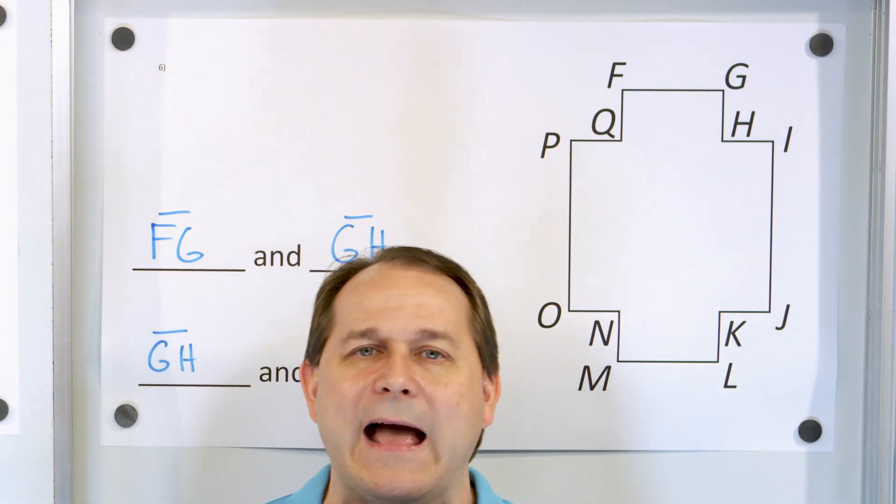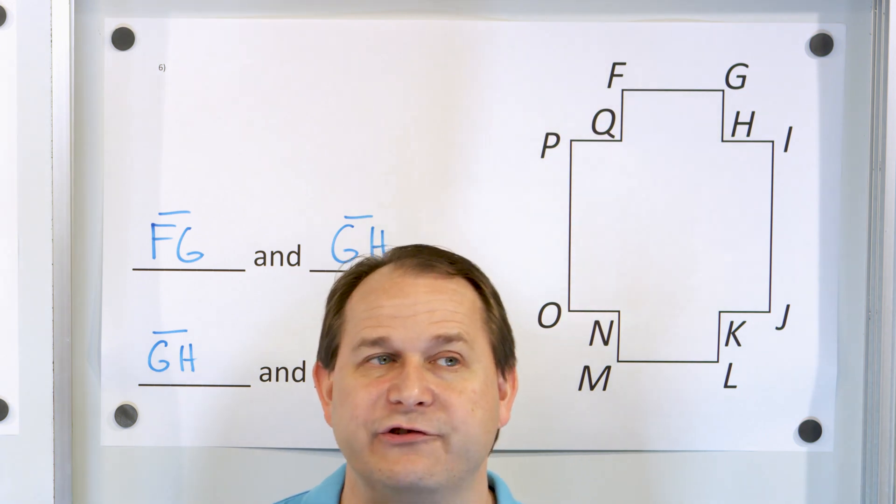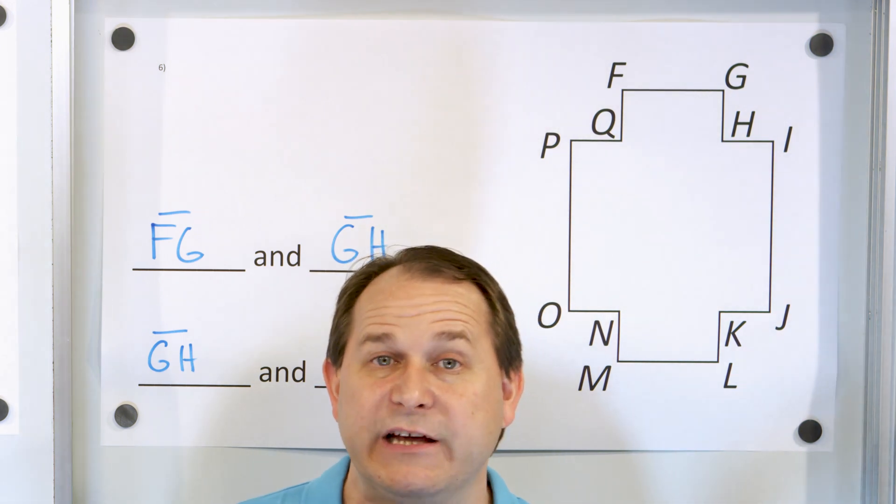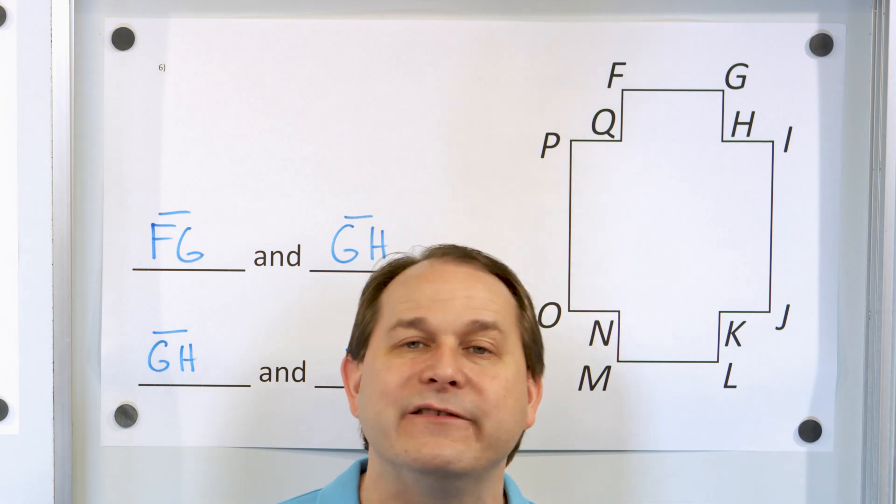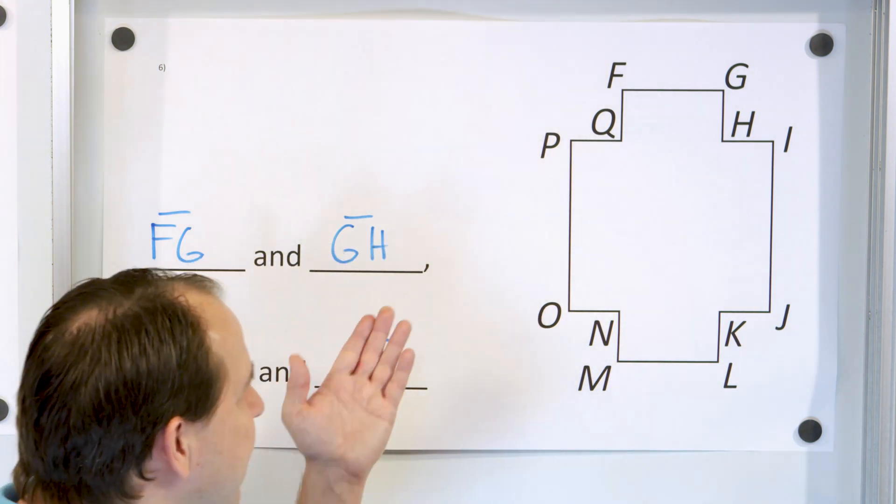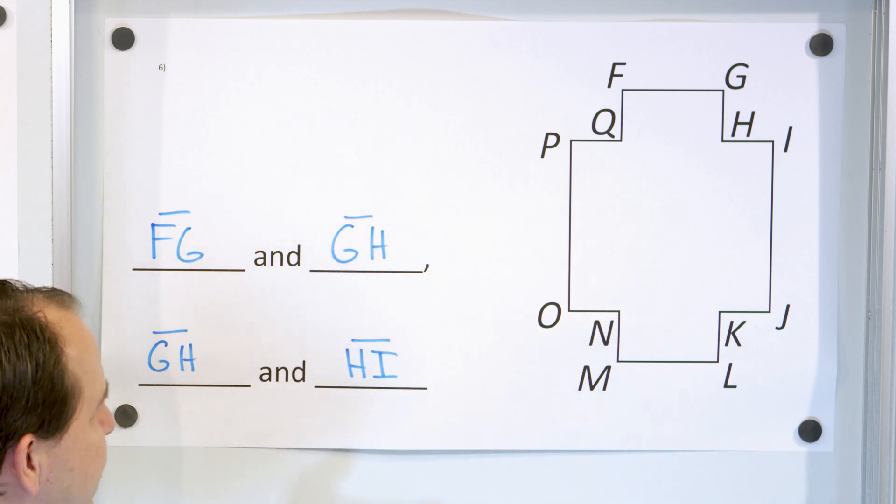But that's okay because this problem did not ask us for right angle intersections or perpendicular line segments. They just ask for intersecting line segments. And these are several answers that you can pick here, but these segments are intersecting and these segments are also intersecting.